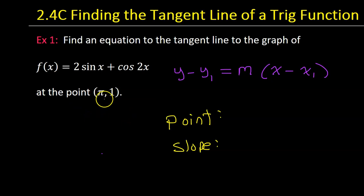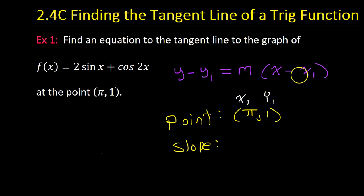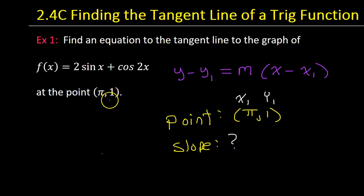We already have a point given to us in the original problem. We know that one point on the line is pi comma 1, and this point is our x1 and our y1. The only thing we're missing is the slope. How do you find the slope of a curve at a point? Isn't that the definition of the derivative?